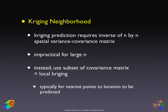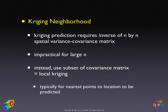We limit the covariance matrix to the nearest points to the location we want to predict. For example, we take the nearest 50 points rather than all points in the data set, because we know that points further away will not have a big influence on the precision of the estimates. This is called local kriging. It is somewhat arbitrary as to how local this should be — this is a matter of practice, and in the lab you will experiment with different windows for local kriging.